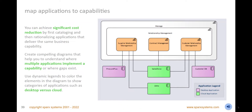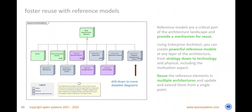Map enterprise and desktop applications to business capabilities to visualize how a business service is realized. Enrich your solution architectures by demonstrating how the applications support an increment of an existing or a completely new capability. Add dynamic legends to color the elements in the diagram to show categories of applications such as desktop vs. cloud. Create and view business and technical reference models at any layer of the ArchiMate language, from strategy, information, and application down to the technology and physical layers. Foster re-use across all architectures and initiatives by making these reference models available to all modelers.